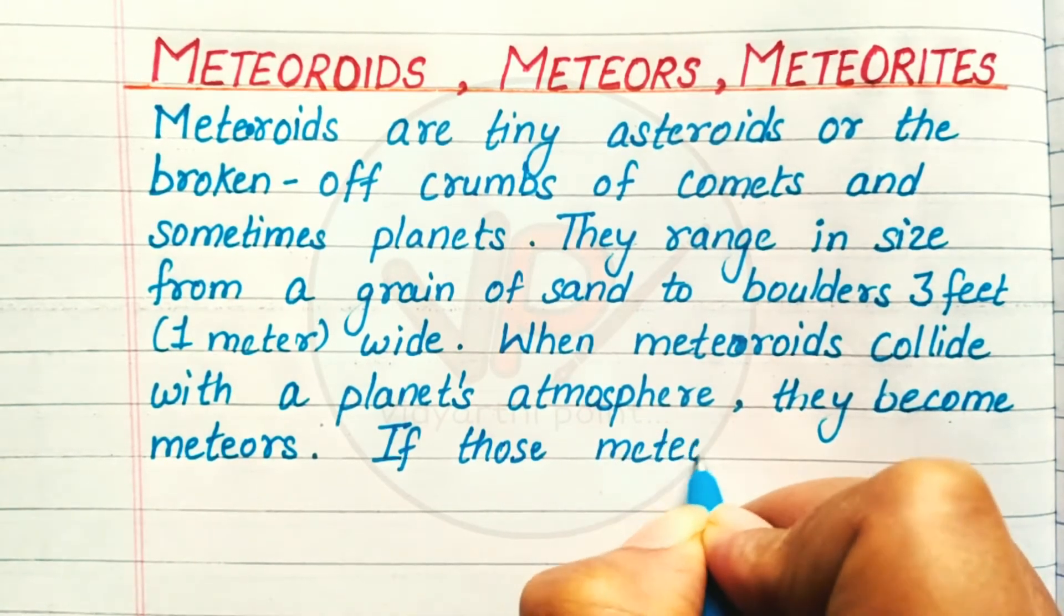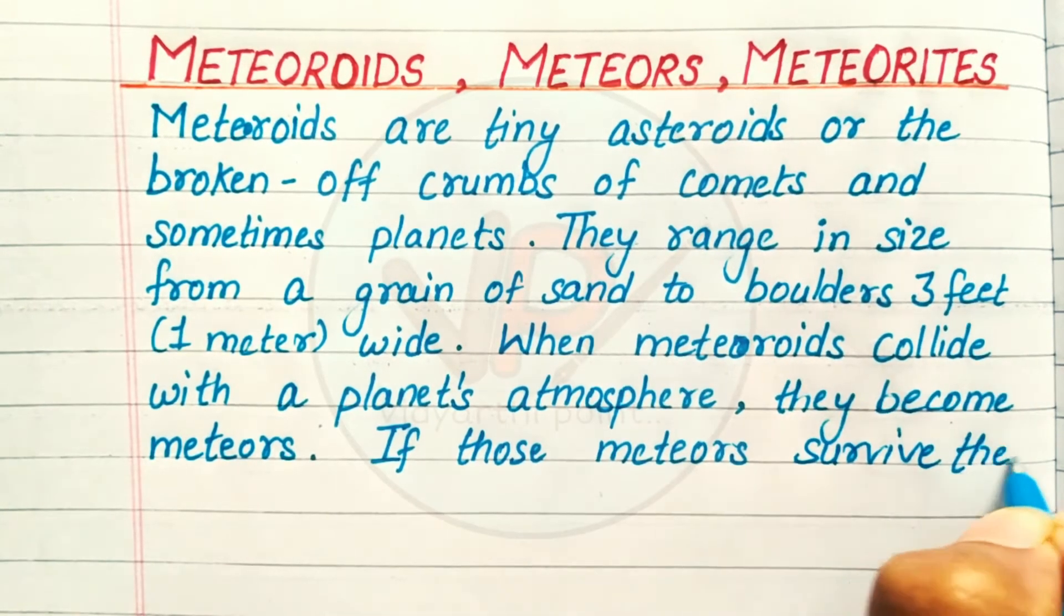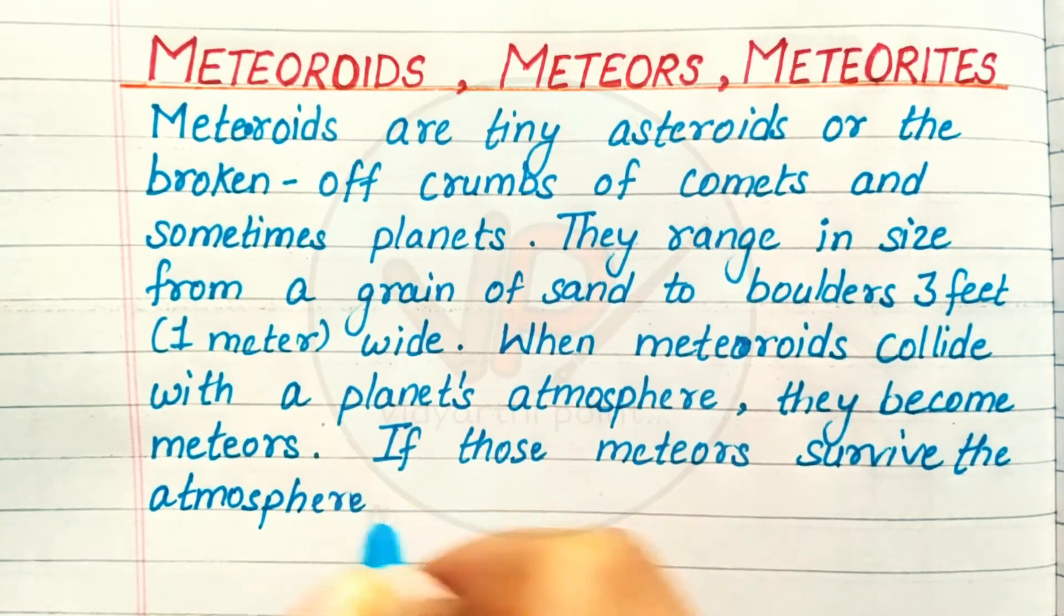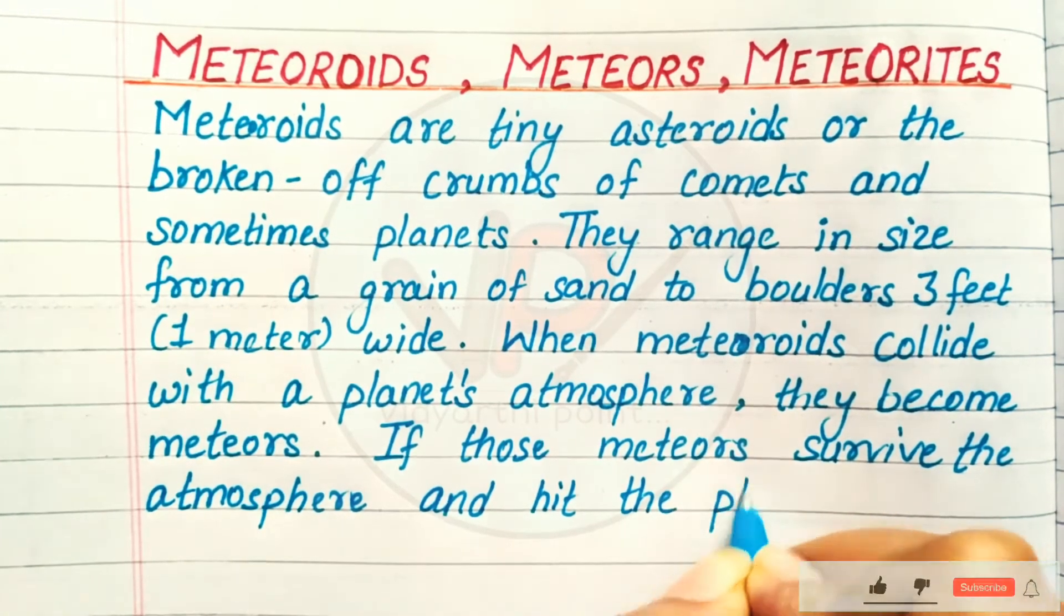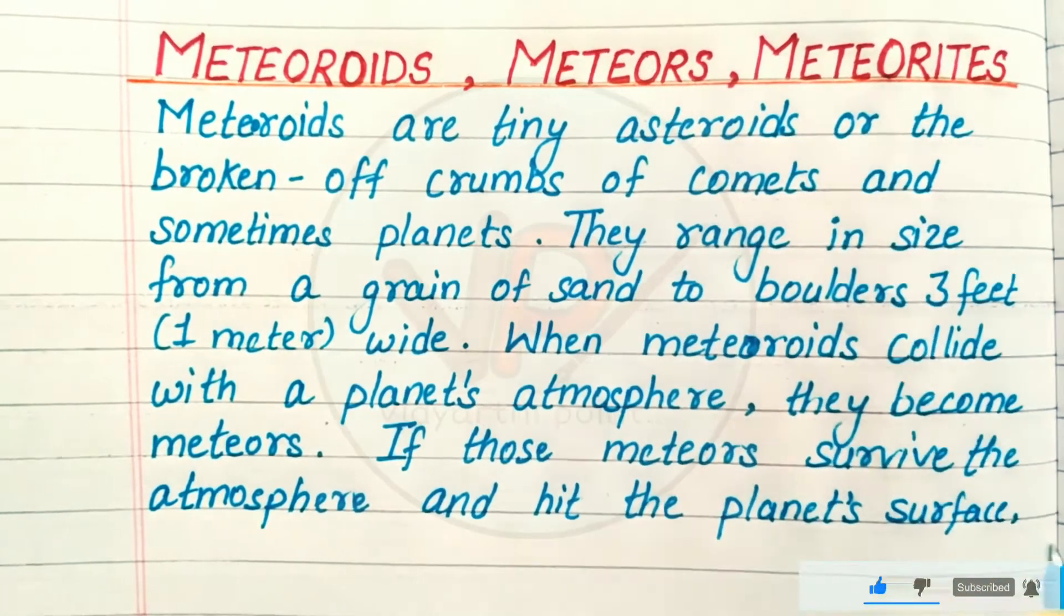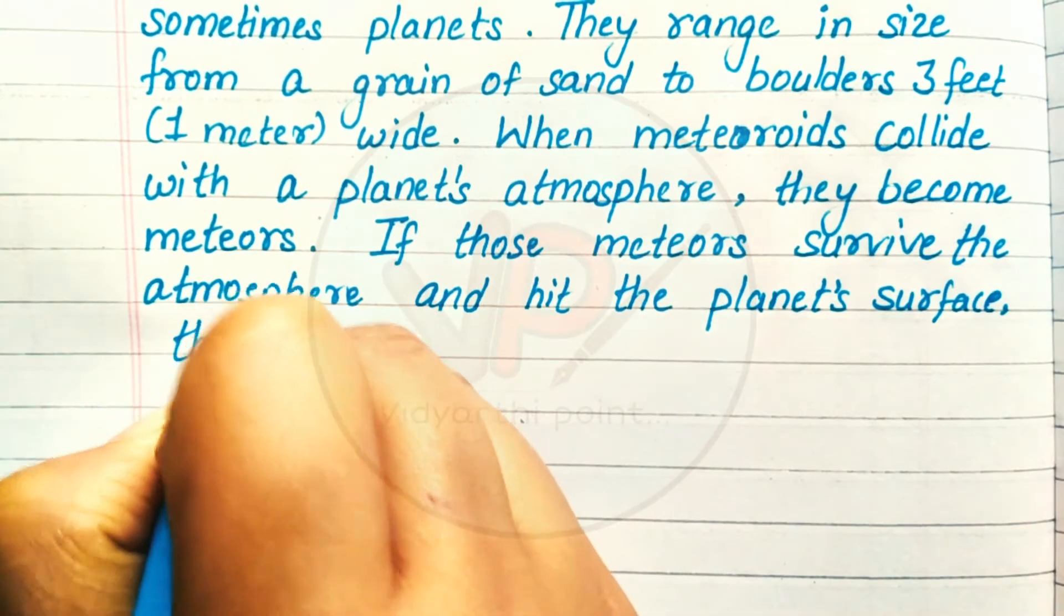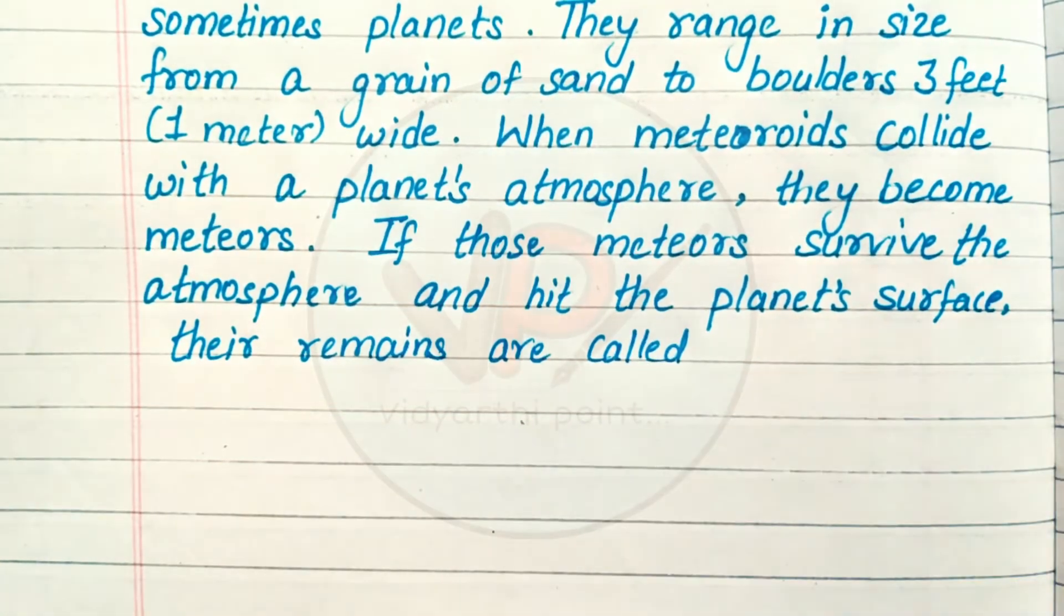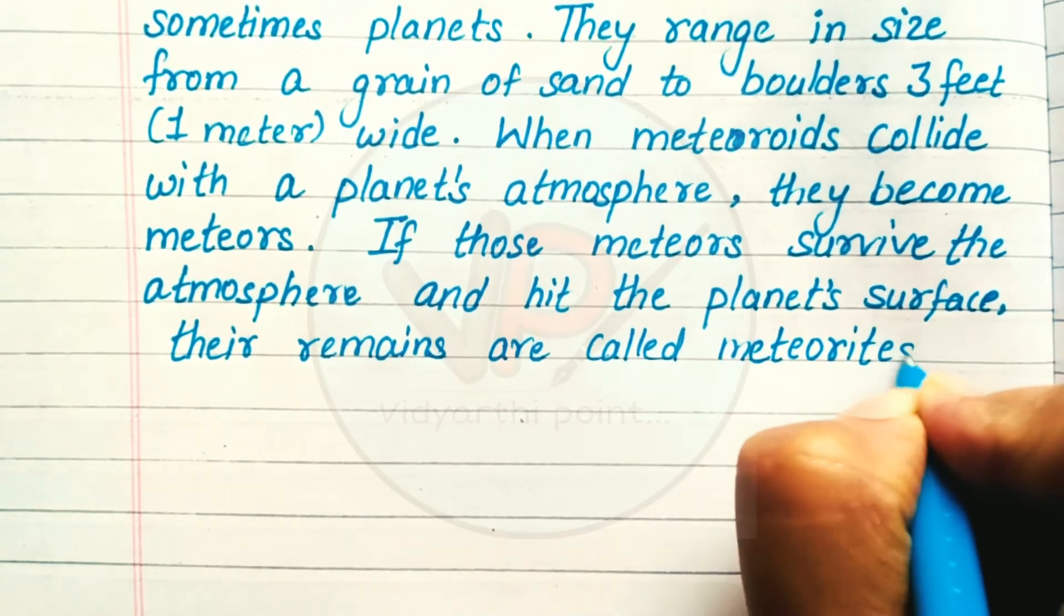If those meteoroids survive the atmosphere and hit the planet's surface, their remains are called meteorites.